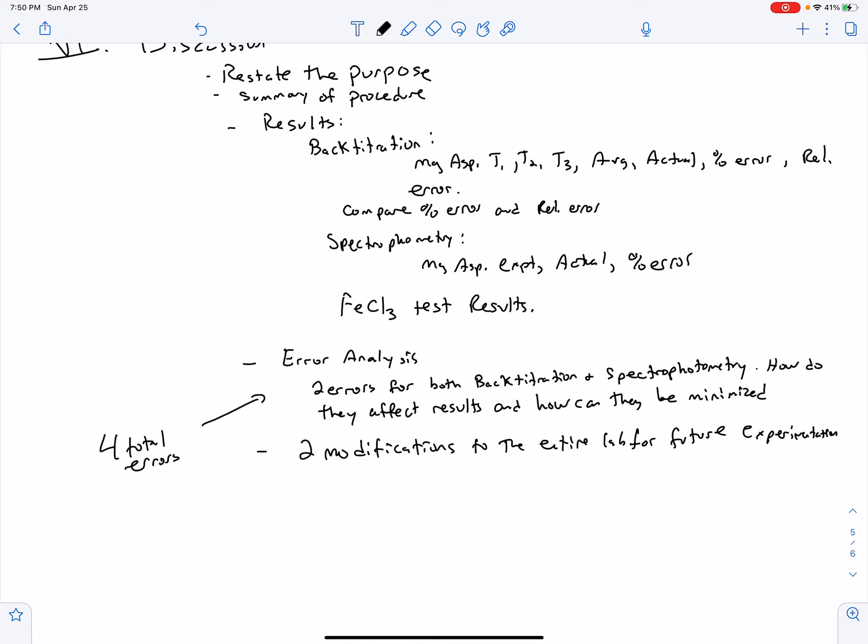Finally, two modifications for the entire lab for future experimentation. And so while you'll have four total errors, how they affect your results, how they can be minimized, there will be two ways to improve the lab. I would suggest doing one for your back titration and one for your spectrophotometric analysis. And that's it. If this lab were to be done again, what would you do differently? So now that you've done it, were there things that seemed like they could have gone better if you did maybe this or if you did that? Kind of some critical thinking. Well that's it. If you have any questions, definitely ask. I think I've covered everything for our lab on the analysis of aspirin.